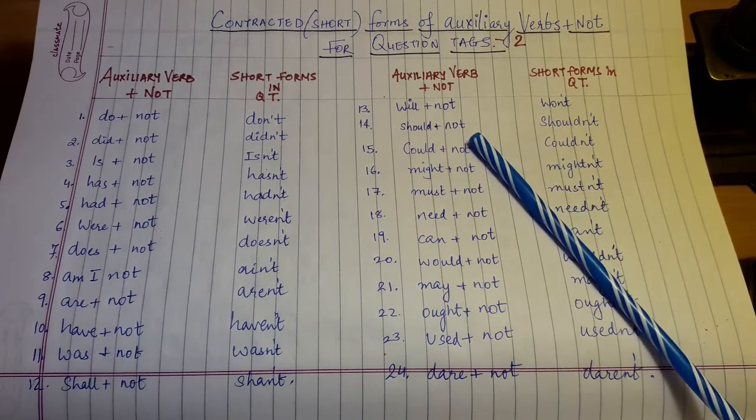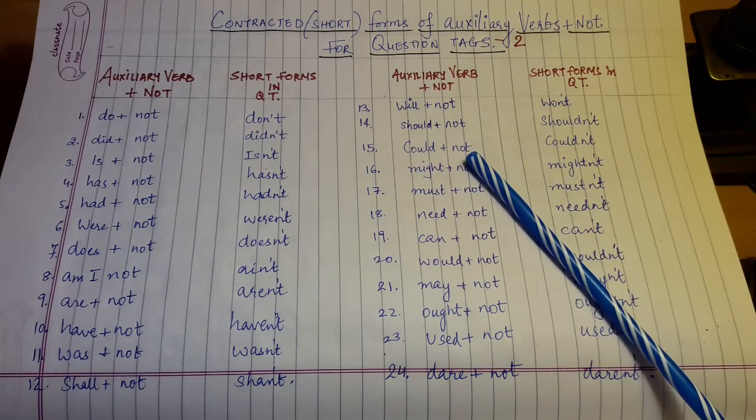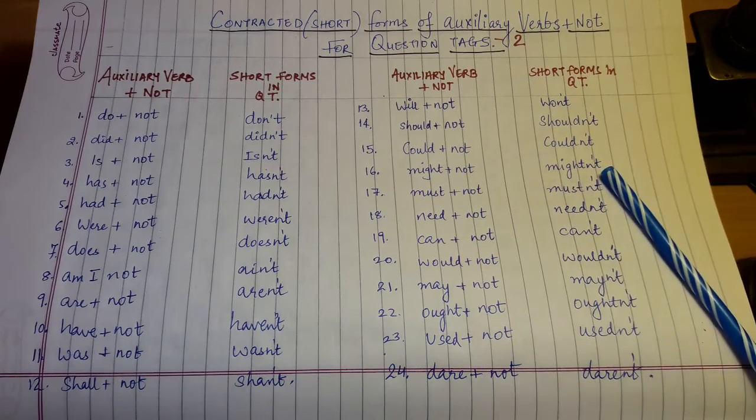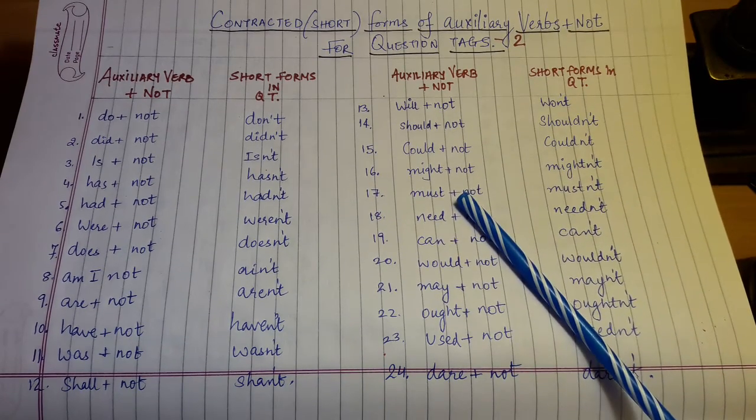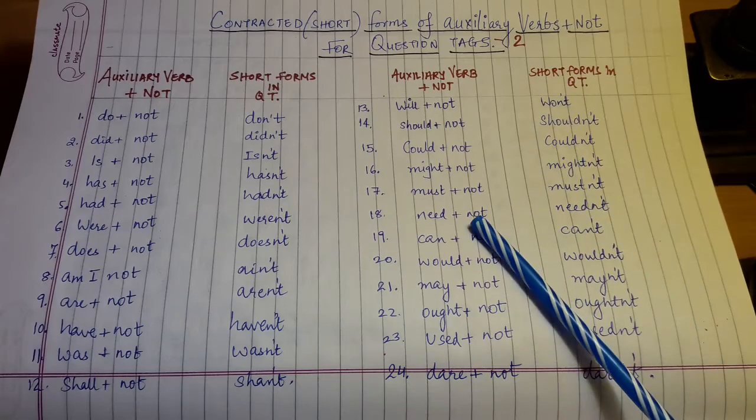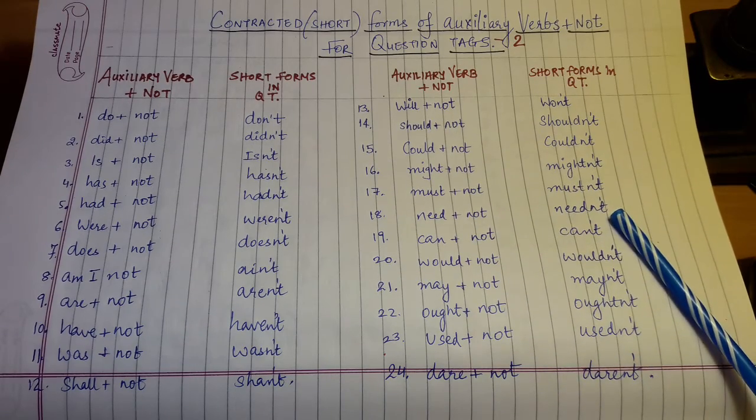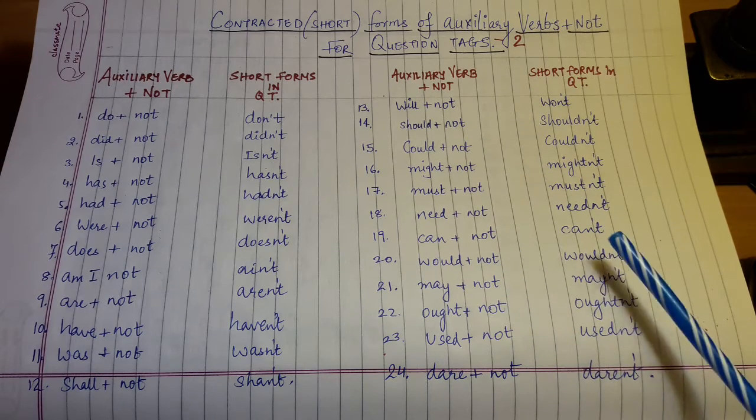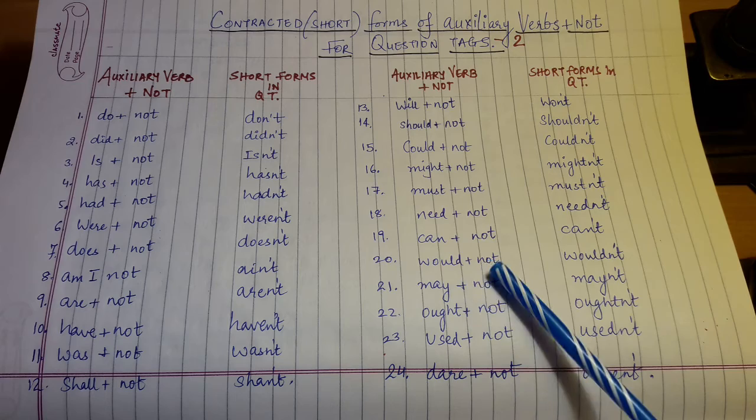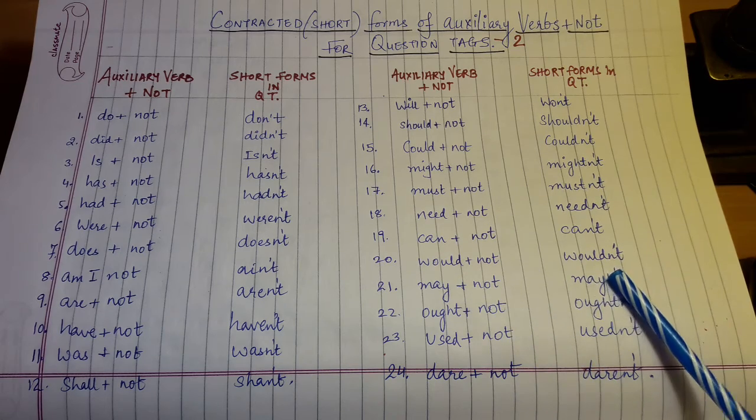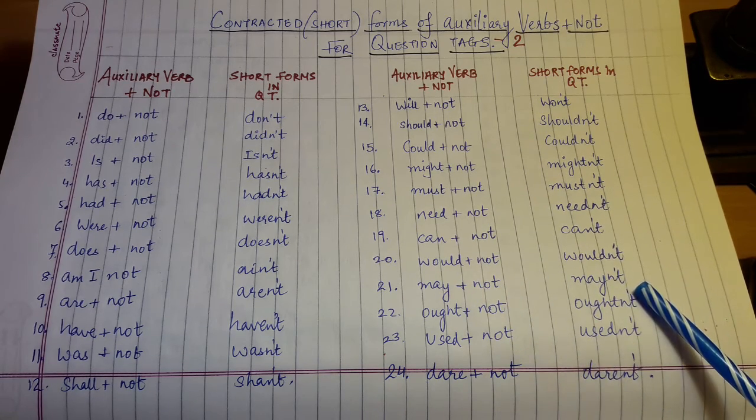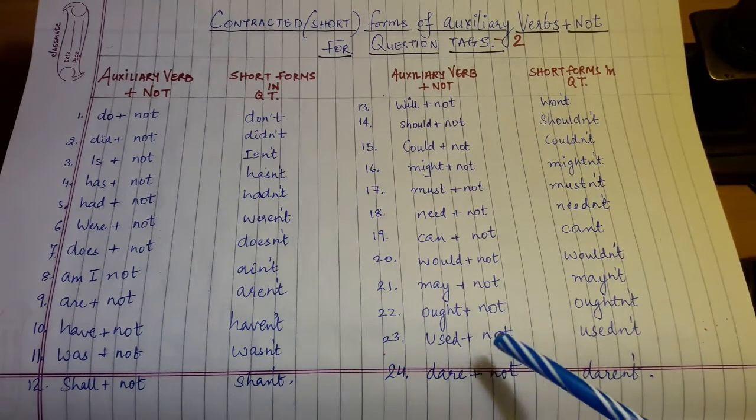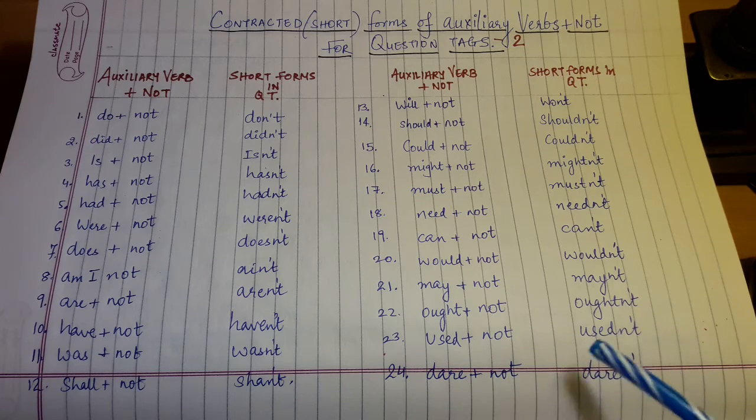Should not - shouldn't, could not - couldn't, might not - mightn't, must not - mustn't, need not - needn't, cannot - can't, would not - wouldn't, may not - mayn't, ought not - oughtn't, used not - usedn't.